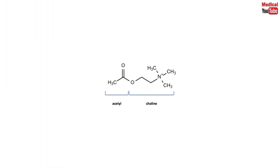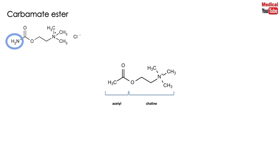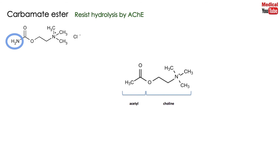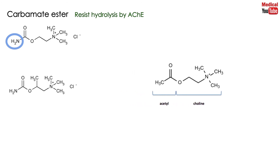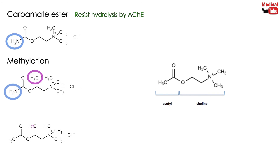To overcome acetylcholine's problems, two modifications have been developed: making a carbamate ester to resist hydrolysis by acetylcholinesterase, and/or making beta-methylation to make the product more selective to muscarinic receptors.